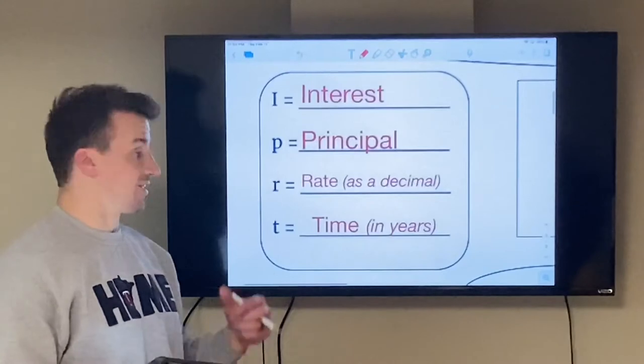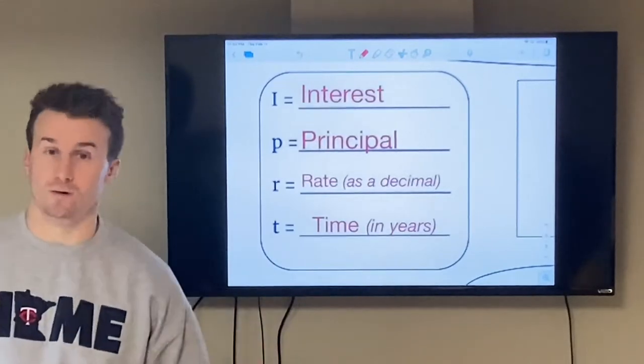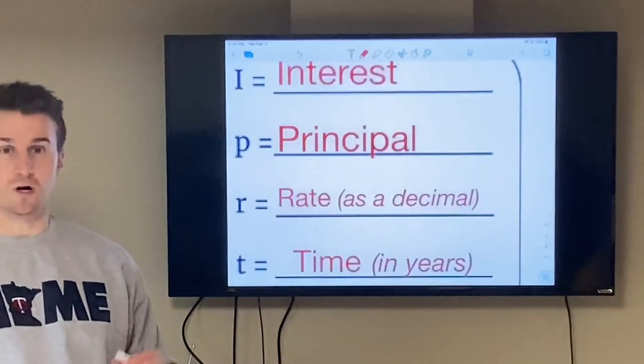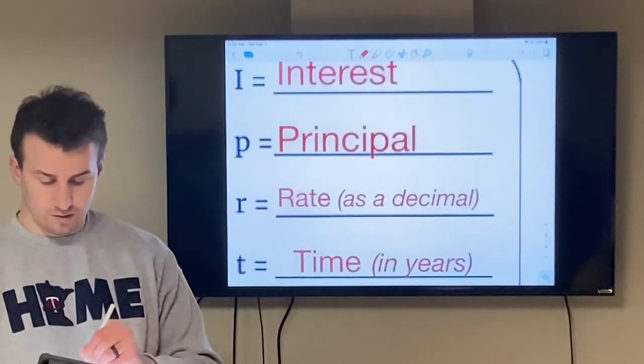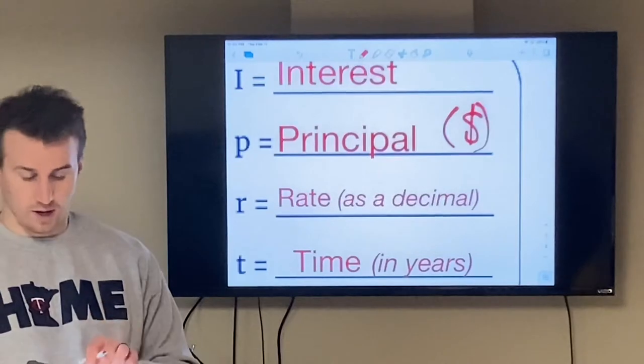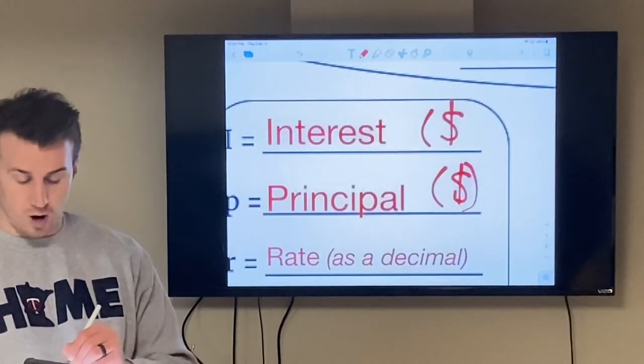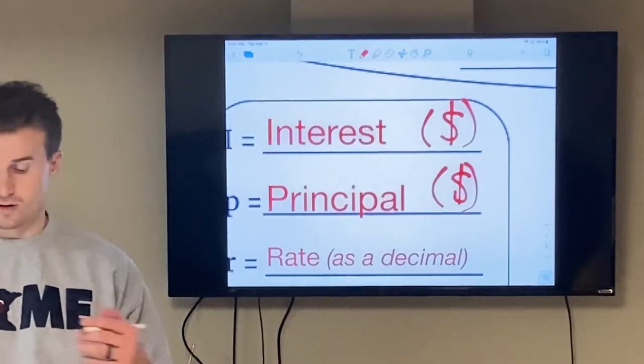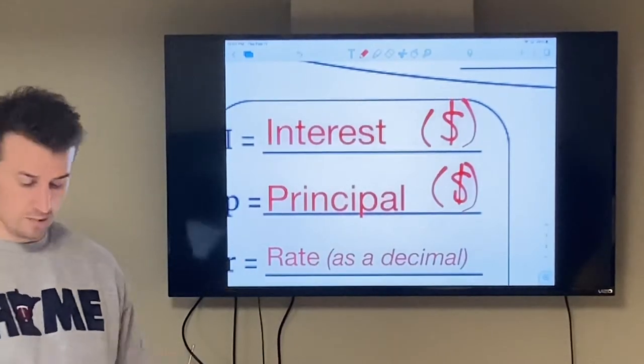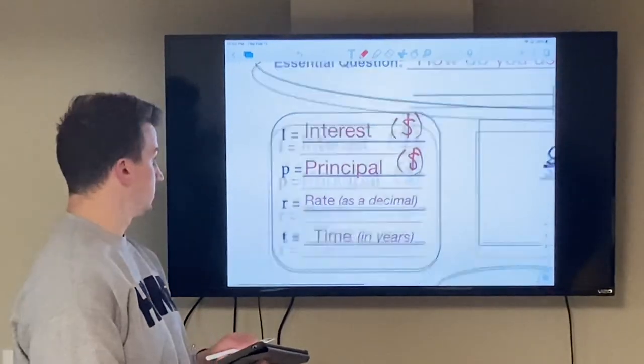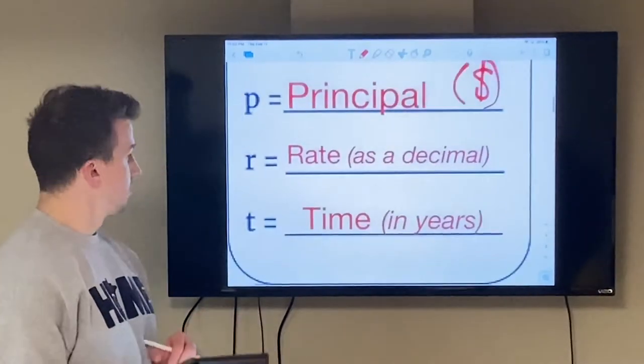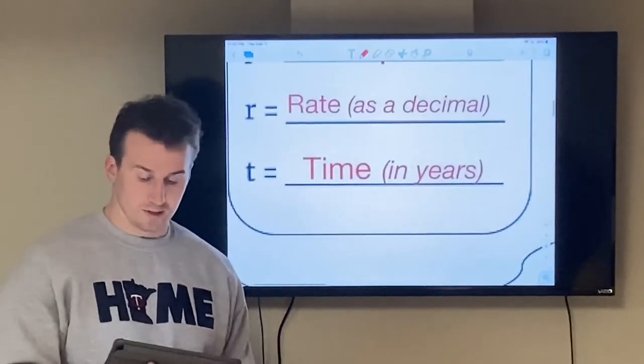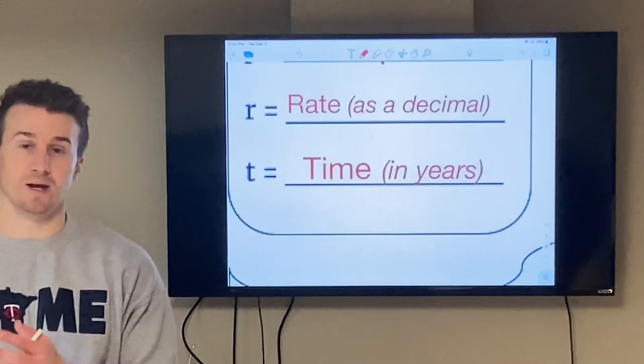So what does each letter represent? The I represents the interest, which is an amount paid over time. The principal is also a dollar amount that is either borrowed over time or owed over time. Now the rate is a percent as a decimal. And the T represents the time, which has to be in years.